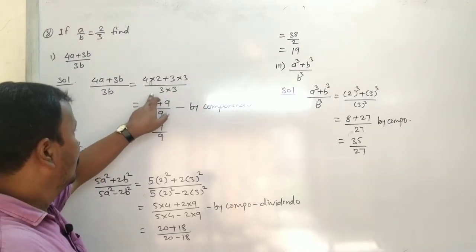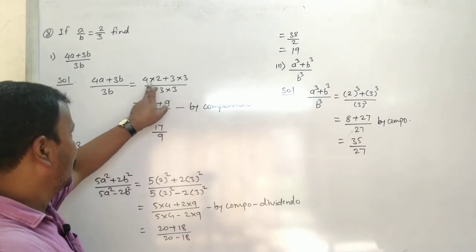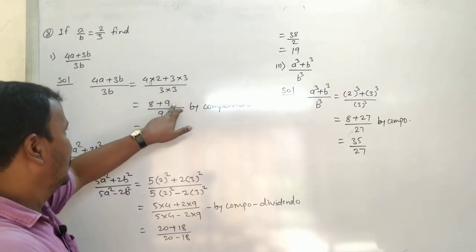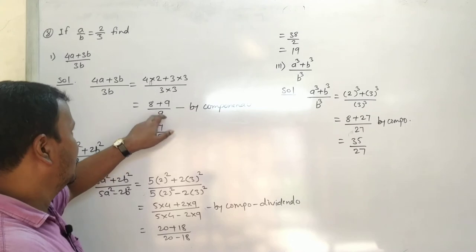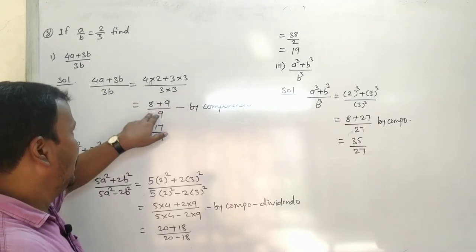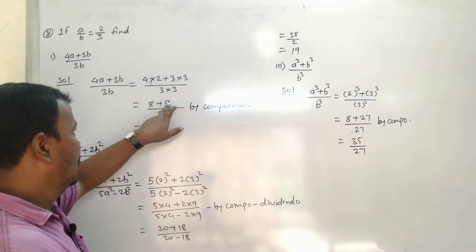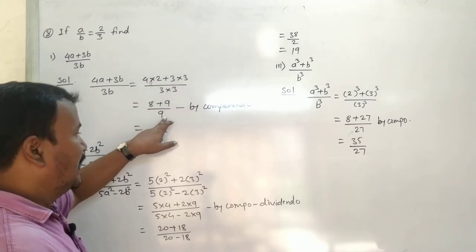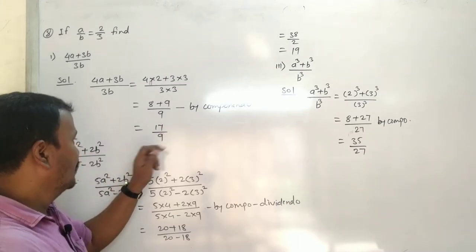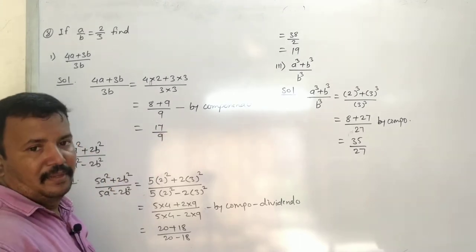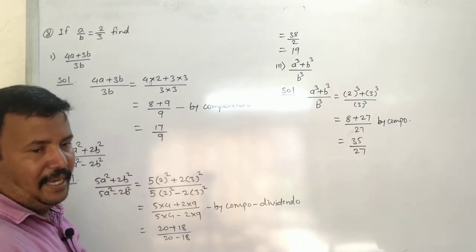So the denominator is 3 into 3, which is 9. Numerator: 4 into 2 is 8, plus 3 into 3 is 9, so 8 plus 9 is 17. The answer is 17 upon 9.